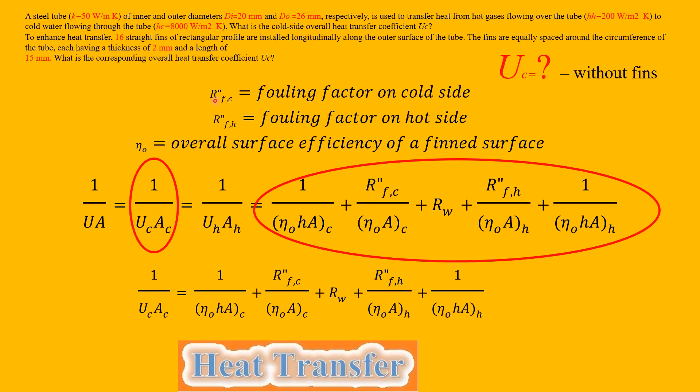We can see on the right hand side we have five different components. As a quick review, this one is the convection on the interior for us because that's the cold side, then we have the fouling on the cold side on the interior, then we have the resistance as the energy would go through the wall itself of the tube.